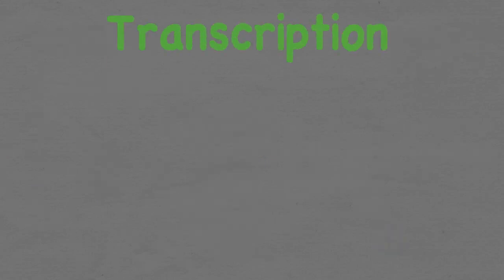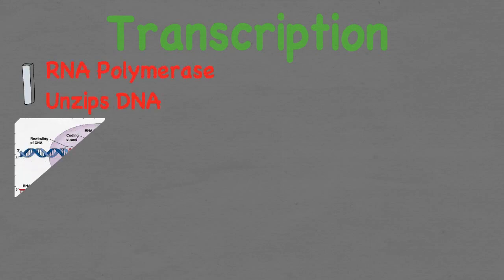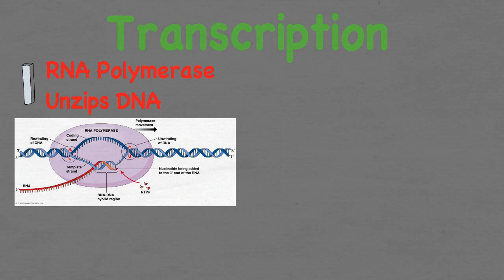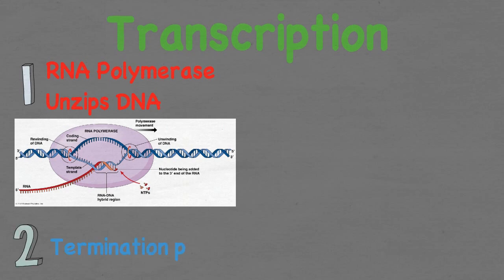Now let's look at the first part of the process: transcription. RNA polymerase is the enzyme responsible for making mRNA copies of the genes. The DNA unzips at the site of the gene that is needed. The RNA polymerase travels along the DNA template strand, catalyzing the nucleotides into an RNA molecule that will carry the information encoded in the DNA. The RNA polymerase continues to move along the DNA strand until it reaches a termination signal.